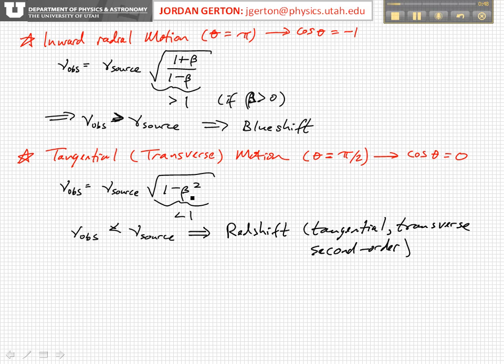And it's called the tangential or transverse or sometimes second-order redshift. Because, first of all, it's second-order because it's second-order in beta, and tangential and transverse for obvious reasons because it's going transverse to the line that separates the source and the observer.